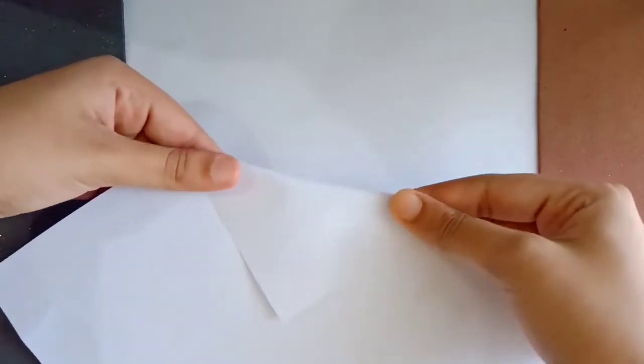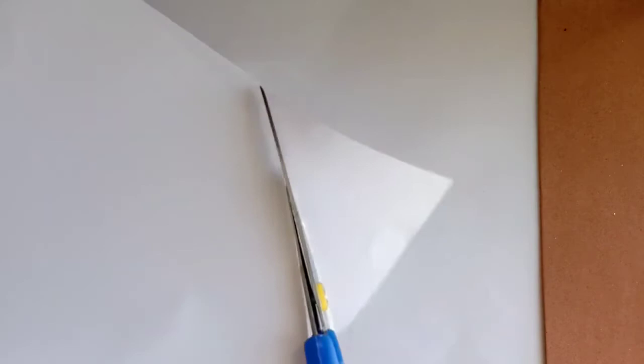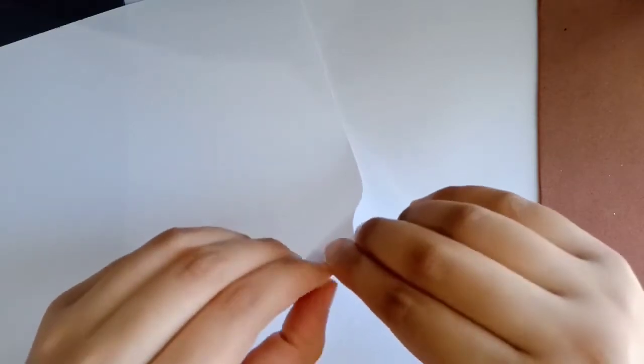Take one piece of paper and cut its ends and keep it aside. Then take the other paper and roll it as tight as possible. This is a very important step.